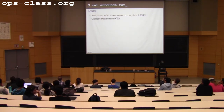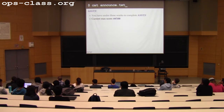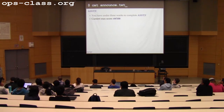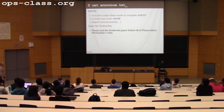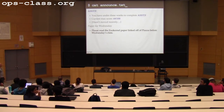The current max score is still a 69. It hasn't moved for a few days, so you guys are just kind of stuck in neutral. Hopefully this trend doesn't continue for the next three weeks. Also, for Wednesday's class, please read the exokernel paper — it's linked off the Piazza forum.